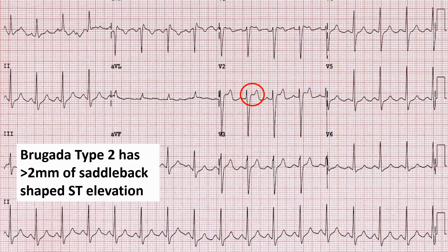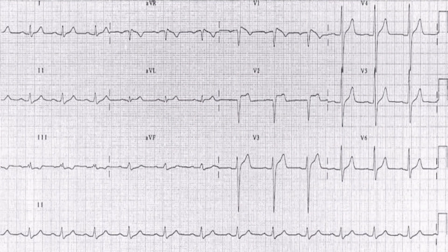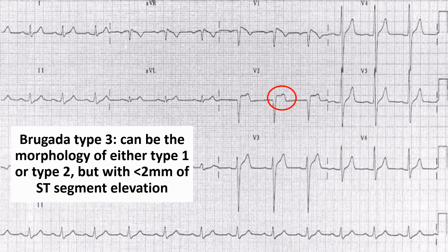For Brugada Type 3, it can either have the morphology of Type 1 — the coved ST segment elevation — or the morphology of Type 2 — the saddlebag-shaped ST elevation. However, the amplitude is less than 2 mm of ST segment elevation.